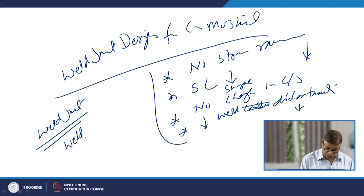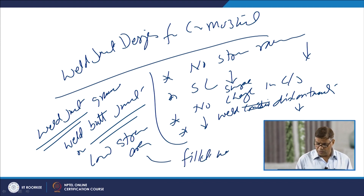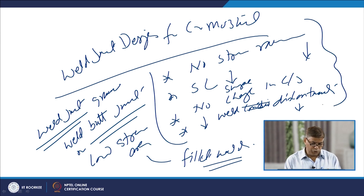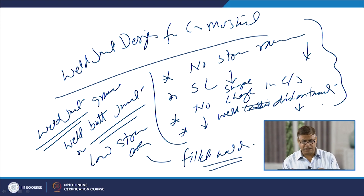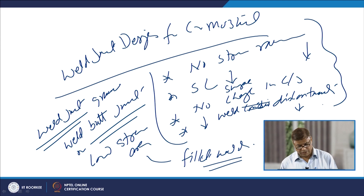Normally, for high-strength weld joints, butt joints are used. Fillet welds are used only in low-stress areas. The general recommendation is to use groove weld joints as much as possible to avoid unnecessary stress in high-stress areas of chromium-molybdenum steel weld joints, resorting to fillet welds only when the joint is in the lowest stress areas.